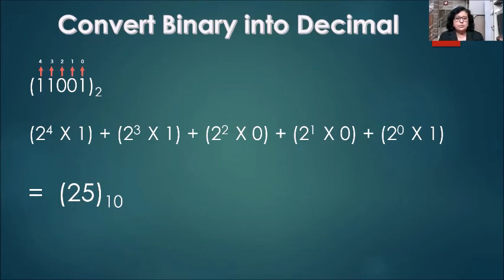Last digit is 1, so 2 to the power 0 times 1. We will be adding all of these figures together to get the final result as 25. Therefore, the final answer is 25 to the base 10.